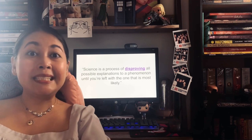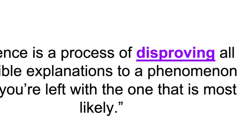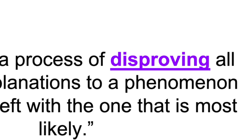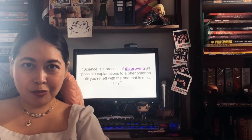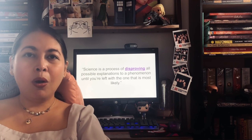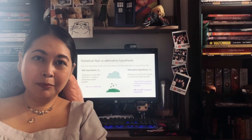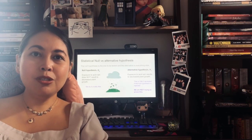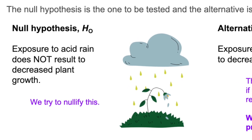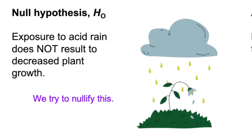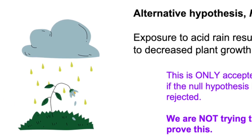But before we talk about what a statistical hypothesis is, let me remind you that science is a process of disproving all possible explanations to a phenomenon until you're left with one. So it's not about trying to prove something — it's trying to eliminate all possible explanations until you have the most probable one. When it comes to your statistical hypothesis, they usually come in pairs. You have your null hypothesis, which is the hypothesis that we will be testing based on the experiments that you're going to perform, and you have the alternative hypothesis, which will be accepted only when the null hypothesis is rejected.